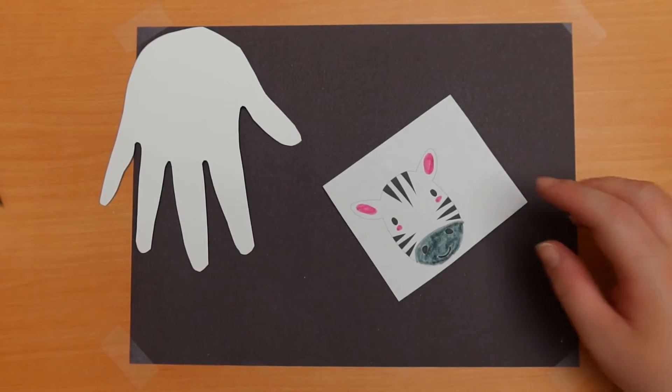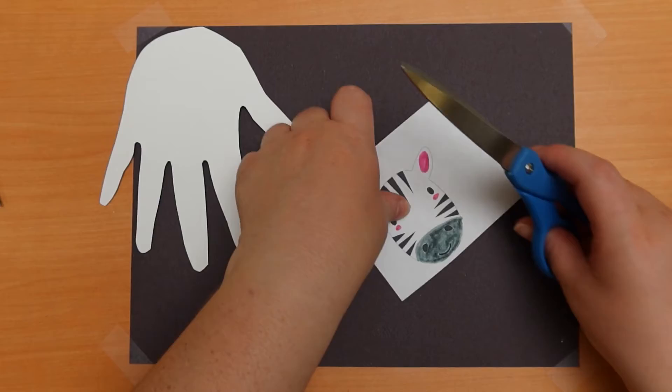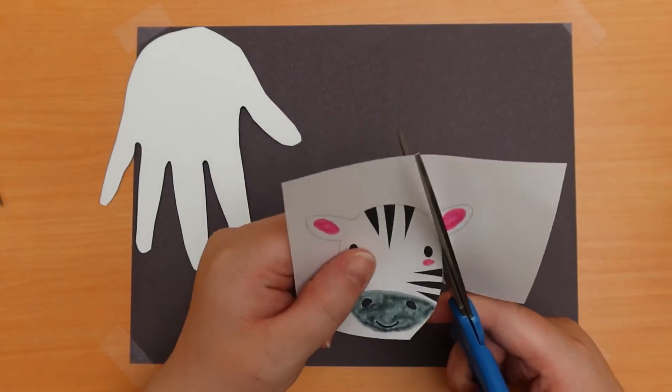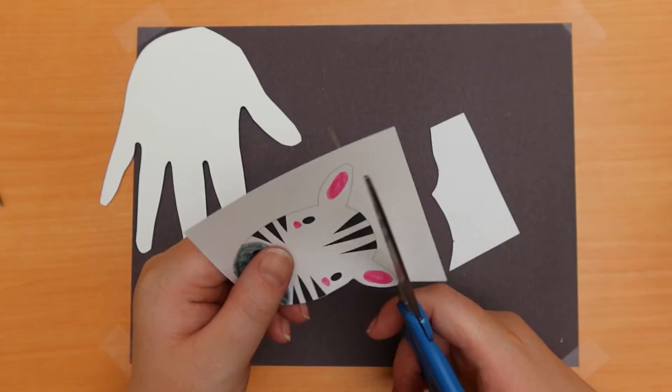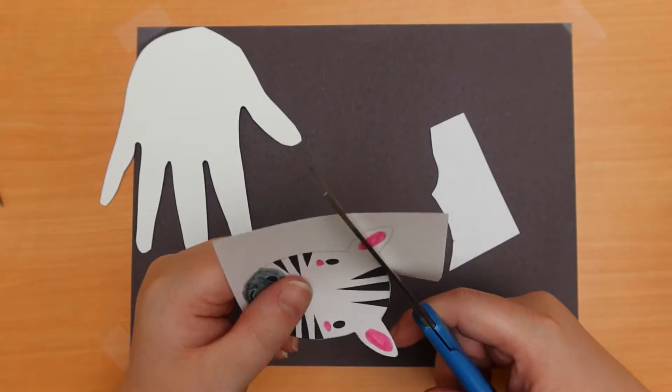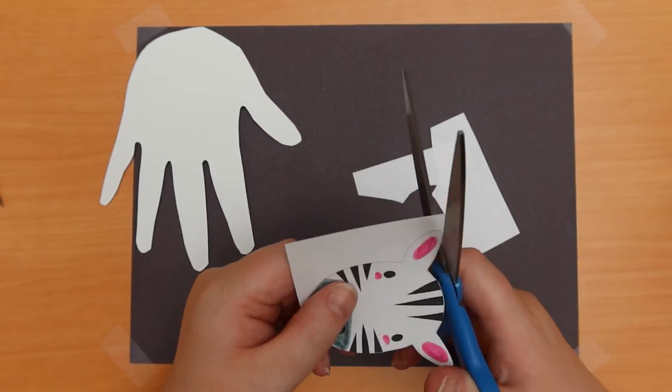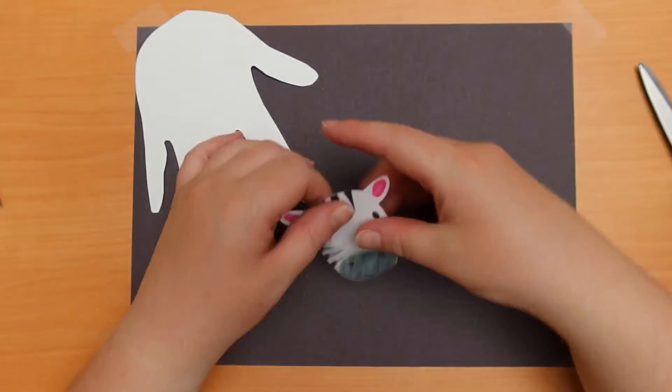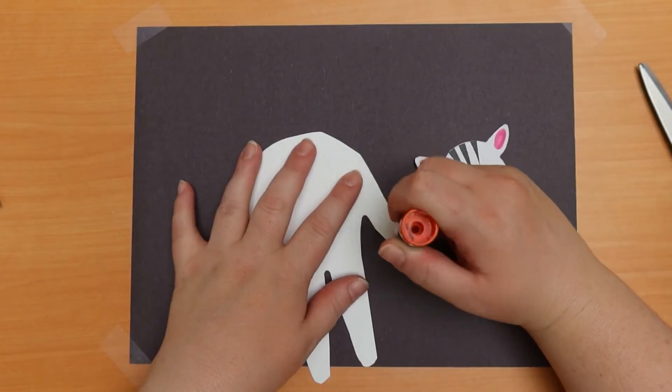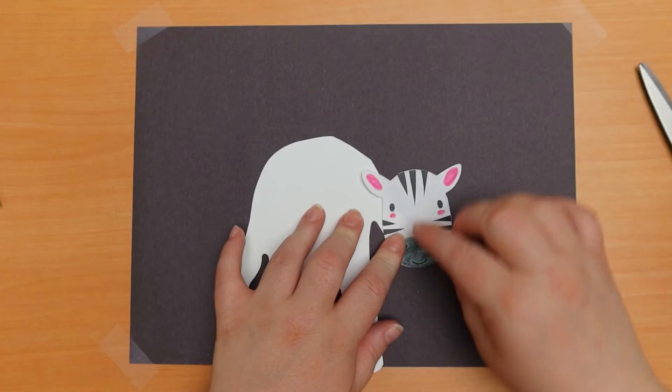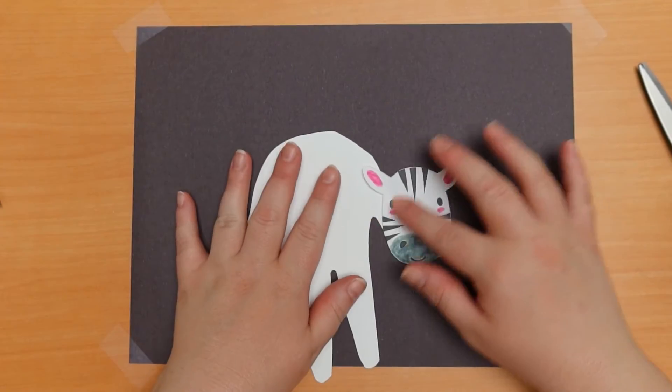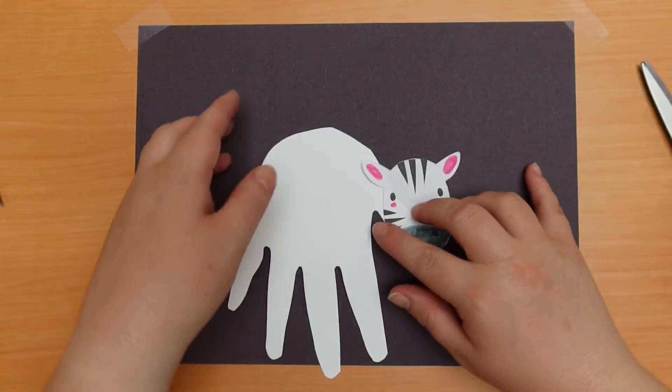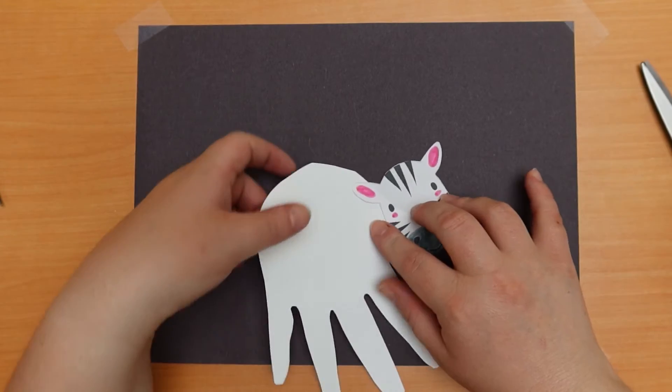Next, you will want to cut out your face and glue it to your thumb. If you need, you can trim down your paw.